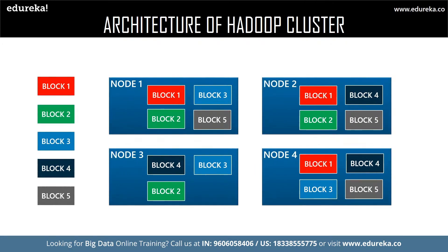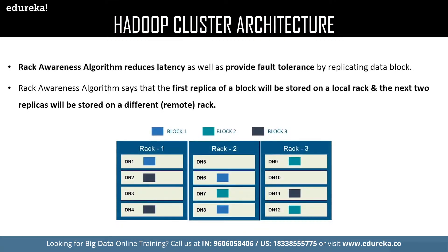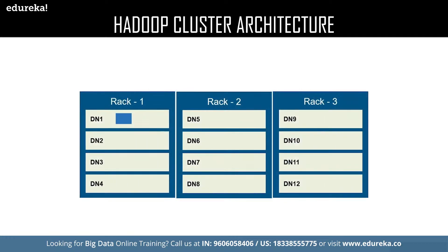The rack awareness algorithm is all about data storage. It states that the first replica of the actual data must be located in the local rack, and the rest of the replicas can be stored on a different remote rack. For example, a data block on data node one is available on rack one, which is the local rack. According to the rack awareness algorithm, the replicas of that data block can be stored in remote racks such as rack two or rack three. Here the replicas have been stored in rack number two.